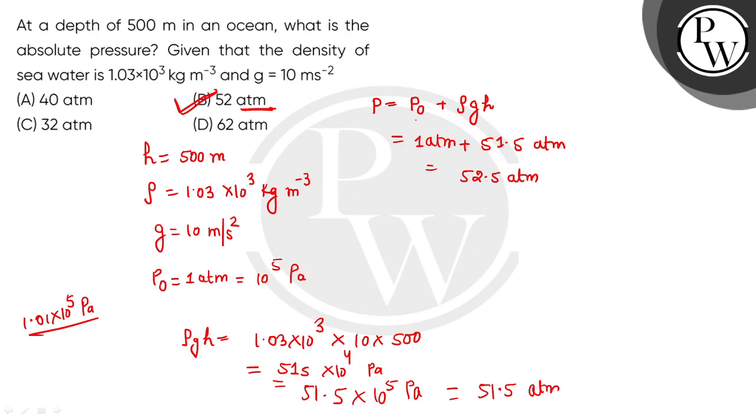The absolute pressure at this depth, P₀ plus ρgh, which is how much value we have 52.5, so we can say that the best option match would be 52 atmospheres, so option B would be the correct choice. I hope you all have understood, thank you so much.